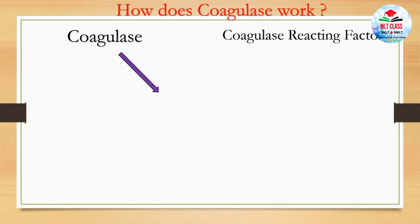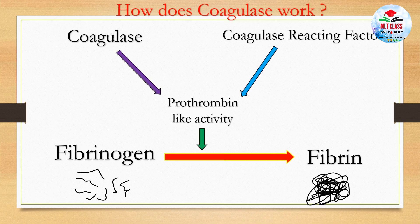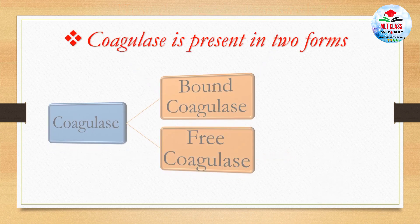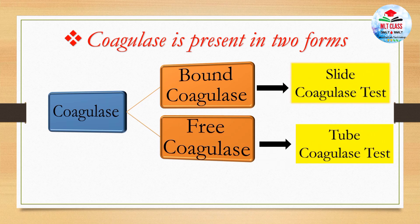How does coagulase work? First, coagulase binds with the coagulase-reacting factor. It acts like thrombin and fibrinogen is converted to fibrin. Coagulase is present in two forms: bound coagulase and free coagulase. Bound coagulase can be detected by the slide coagulase test, and free coagulase can be detected by the tube coagulase test.